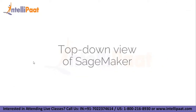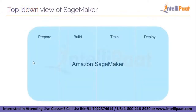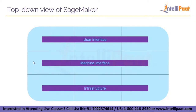Now let us move on to the top-down view of SageMaker — how to understand what SageMaker is from a top-down approach. As AWS mentions in their documentation, SageMaker helps you prepare, build, train, and deploy machine learning projects in its environment. These four stages of machine learning are made possible through three layers of components within SageMaker: the user interface layer, the machine interface layer, and the infrastructure layer.